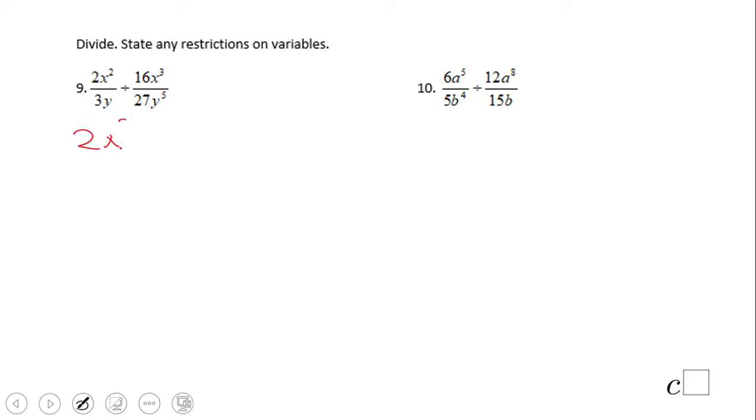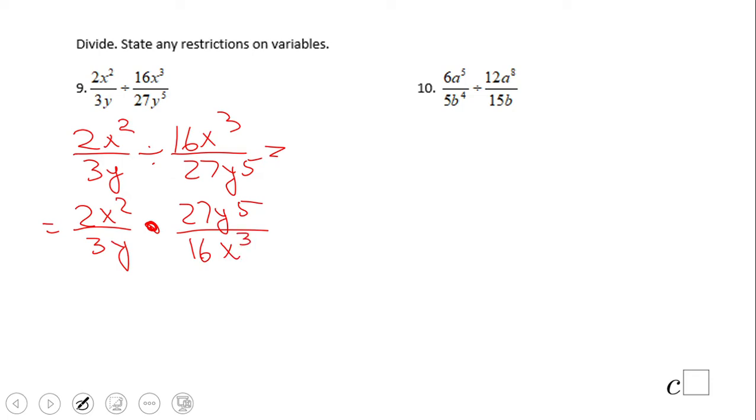We have 2x² over 3y divided by 16x³ over 27y to the fifth. What you have to do here is keep the first fraction 2x² over 3y, change the division to multiplication, and flip the second one. The problem becomes nothing else than multiplication of rational expressions.